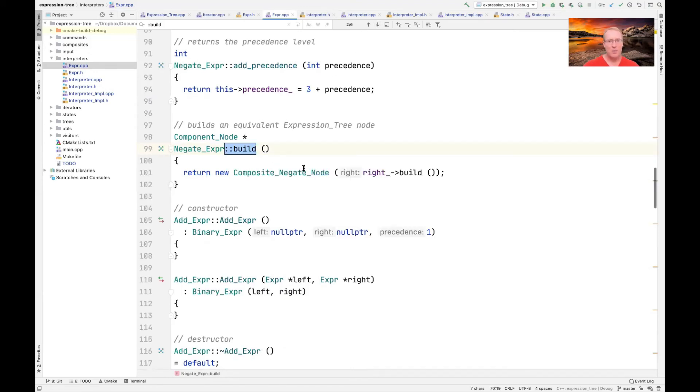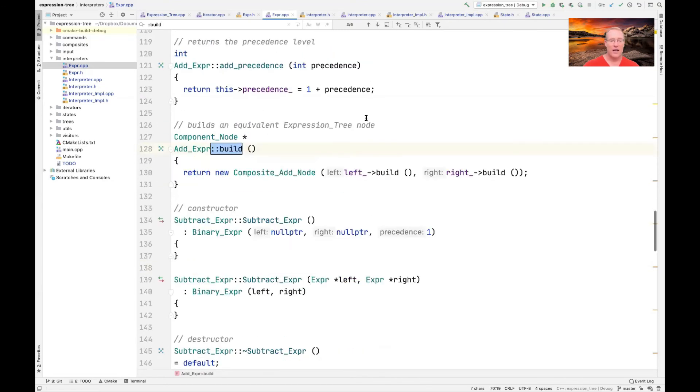Likewise, negate expert returns a composite negate node. Likewise, add expert returns composite add node. And each step along the way, it's calling the build methods recursively on the parse tree to generate the elements of the expression tree.